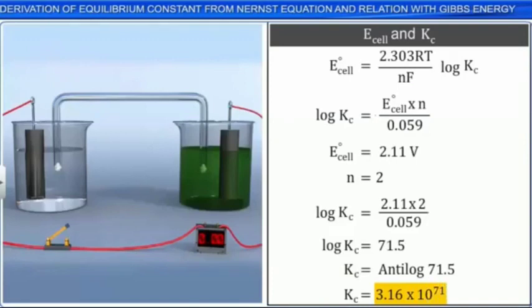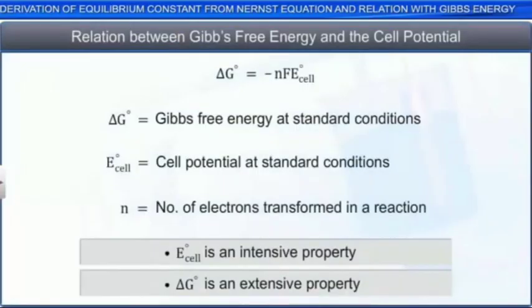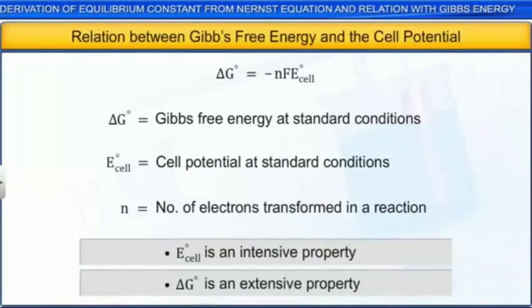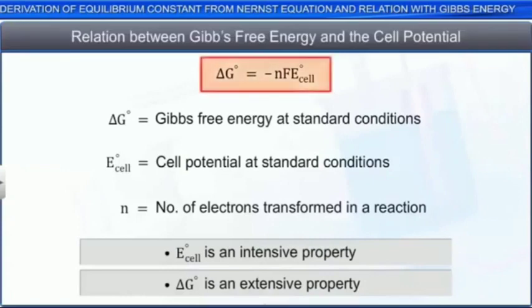It is also possible to derive an equation relating the Gibbs free energy and the cell potential. The equation is shown here. This is another equation that you should memorize. Note that standard cell potential is an intensive property, but the Gibbs free energy is an extensive property. The value of delta G depends on the number of electrons transferred.